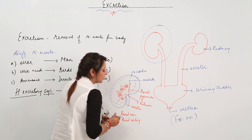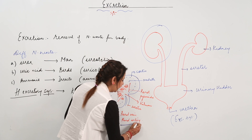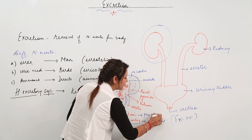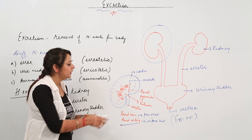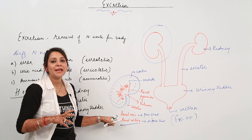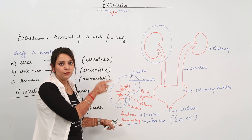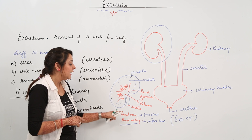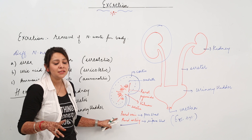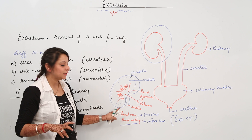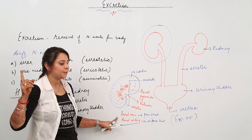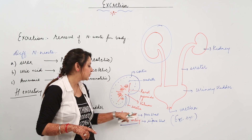Two vessels are associated with the kidney: the renal vein and the renal artery. The impure blood coming to the kidney arrives via the renal artery, and the renal vein carries purified blood away from the kidney. This is an exception because arteries normally carry pure blood, but here the renal artery carries impure blood — similar to the exception that exists in the pulmonary case.